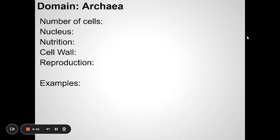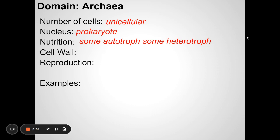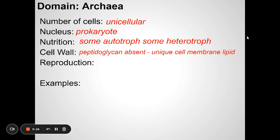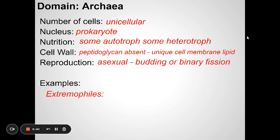Another domain is one you're probably not familiar with at all: Archaea. This is going to look a lot like bacteria — they're unicellular, they're prokaryotes, some are autotrophs and some are heterotrophs. In fact, when archaea were first discovered, scientists put them with bacteria. It wasn't until later, when scientists learned more about them, that they split them into their own domain. Archaea do have a cell wall, but it's made of a different material — one reason they ended up in their own category. They can reproduce asexually by splitting in two.